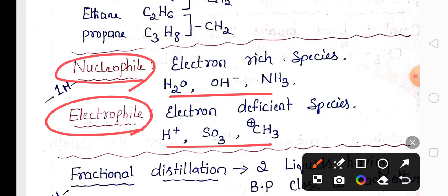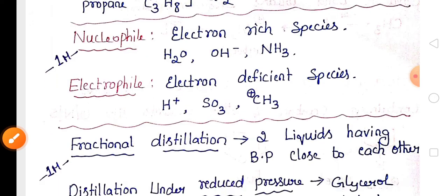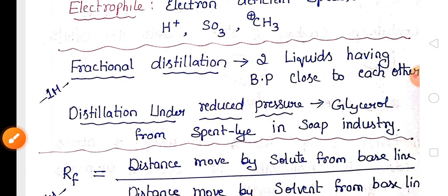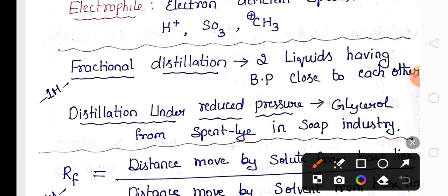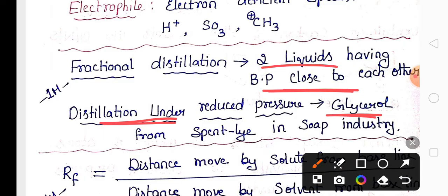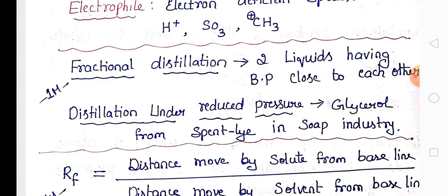Fractional distillation technique is used to separate two liquids having boiling points very close to each other — for example, petroleum products. Distillation under reduced pressure is used to separate glycerol from spent lye in the soap industry.